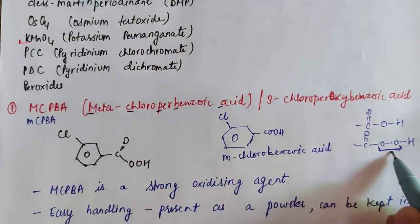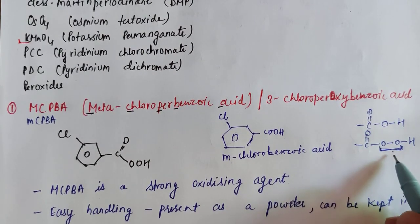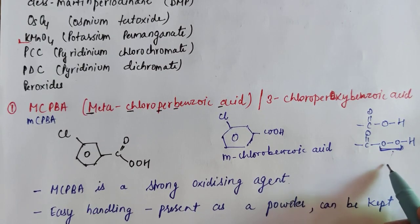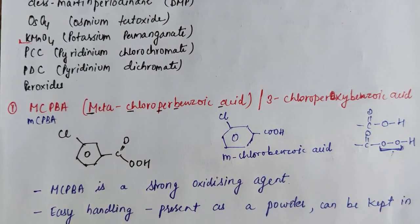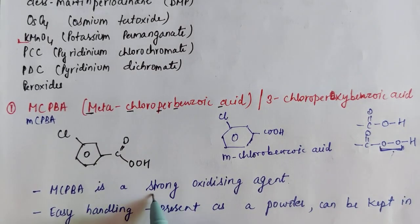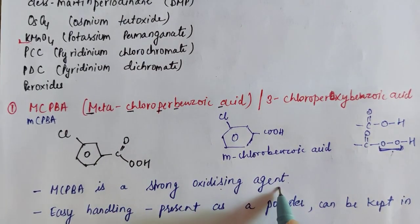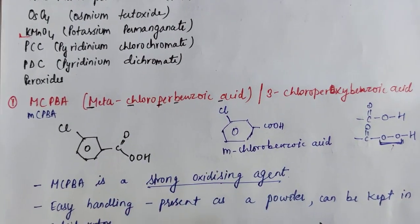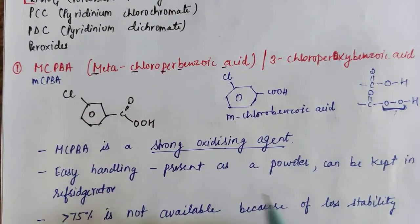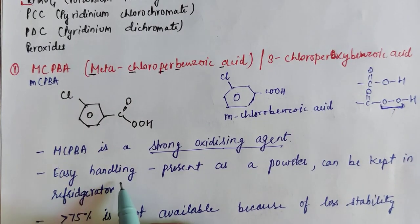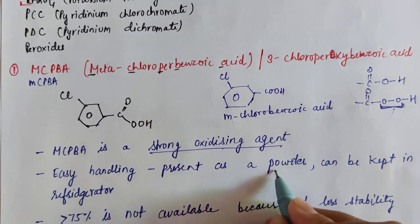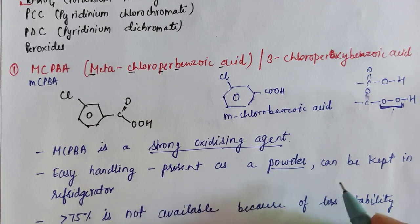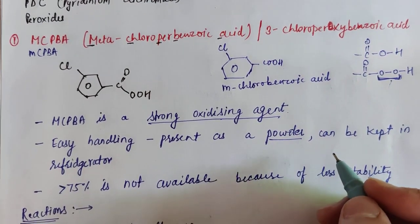This O-O bond is not very strong. It cleaves very easily to provide a nascent oxygen. Due to its lesser stability, it is highly reactive, and this makes it a very strong oxidizing agent. The advantage with this peroxide is it is easy to handle as it is present in the form of powder and can be easily stored in the refrigerator.